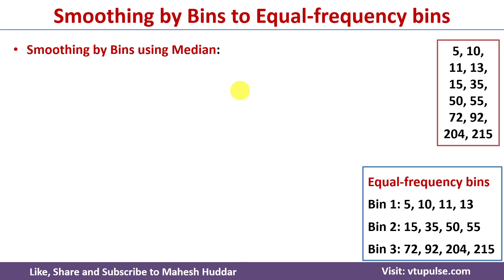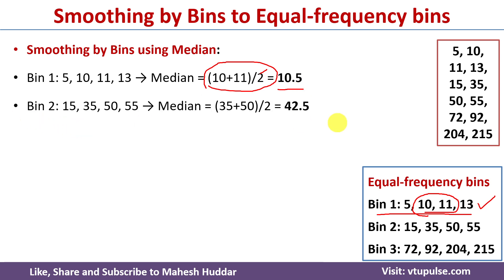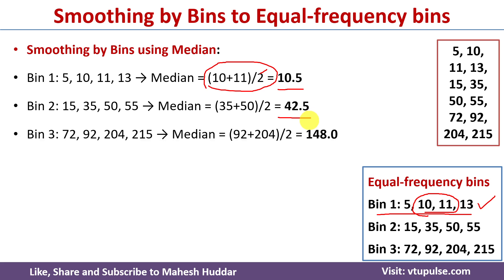For the median calculation: if a bin contains an odd number of data points, the center value is the median. But here all bins contain an even number of data points, so we take the two center points, add them, and divide by two. For the first bin, the two center points are 10 and 11, so we get 10.5. For the second bin the median is 42.5, and for the third bin it is 148.0.